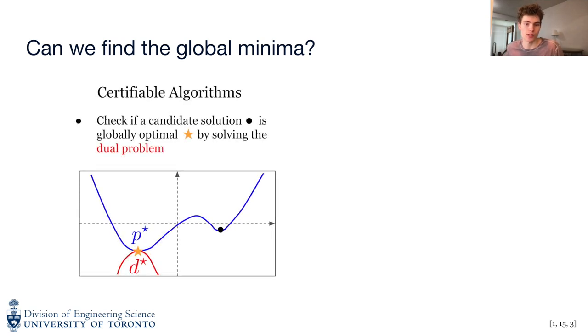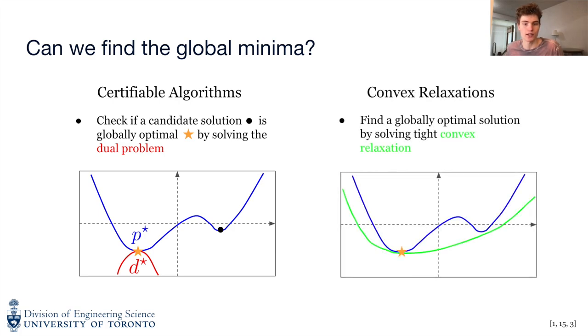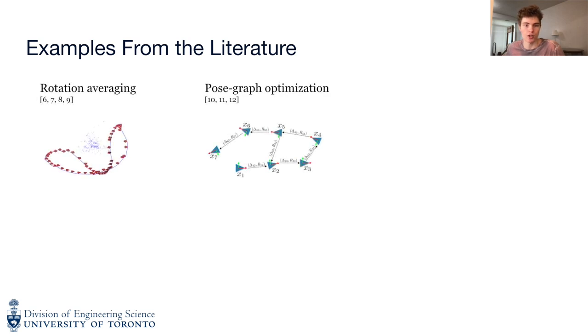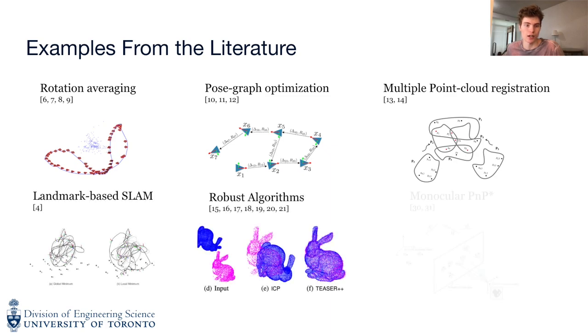Certifiable algorithms that determine if a solution is a global minima and convex relaxations that relax constraints and under certain conditions find the globally optimal solution. These techniques have been applied to many problems in robotics including rotation averaging, pose graph optimization, multiple point cloud registration, landmark-based SLAM, robust algorithms, the monocular PNP problem, and many more.